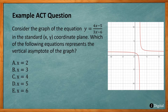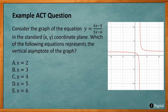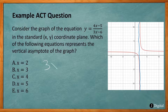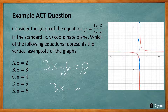Here's an example ACT question: Consider the graph of y = (4x - 5) / (3x - 6) in a standard xy coordinate plane. Which equation represents the vertical asymptote? To find it, set the denominator equal to 0: 3x - 6 = 0, add 6 to both sides, 3x = 6, divide by 3, x = 2. So x = 2 is the equation of the vertical asymptote — answer A.